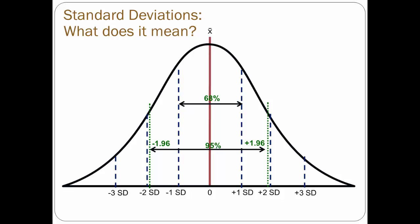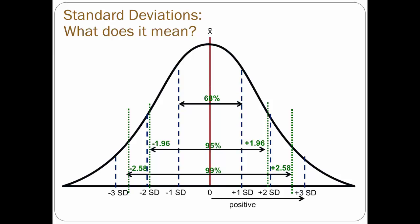To be precise, there is a 99% probability that a score lies within 2.58 standard deviations of the mean. All of the standard deviations to the right of the mean are positive, as they are higher than the mean, while all of the standard deviations below the mean, or to the left, are negative.